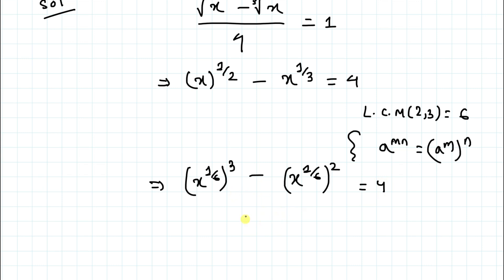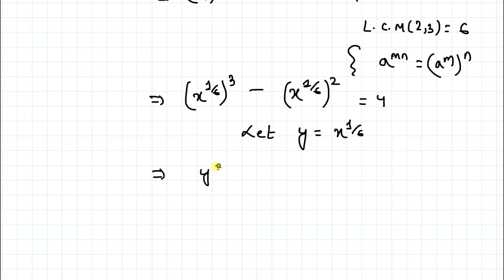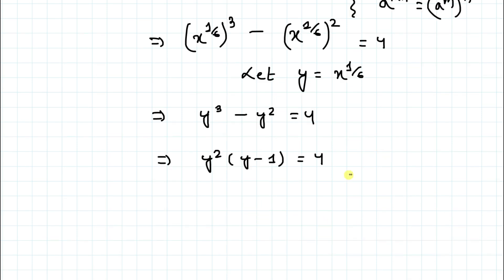Now let's assume y equals x^(1/6). Substituting, we get y³ minus y² equals 4. Taking y² as a common factor gives y²(y minus 1) equals 4. Since x is a positive integer, y is also a positive integer. The factor pairs of 4 are: 4 and 1, or 1 and 4, or 2 and 2.